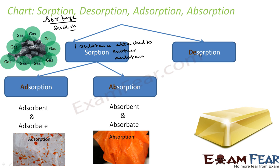Desorption is the physical and chemical process by which a substance is relieved or removed from another substance. So desorption is used for removing both adsorbed and absorbed substances. Sorption has two subtypes: adsorption and absorption. Adsorption is our focus in this chapter.